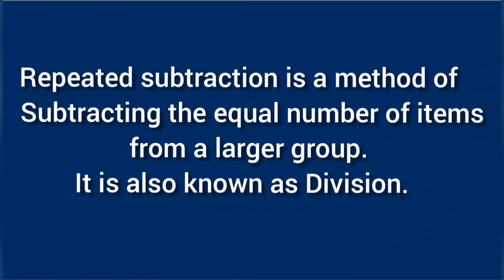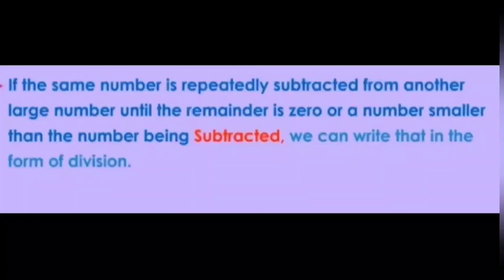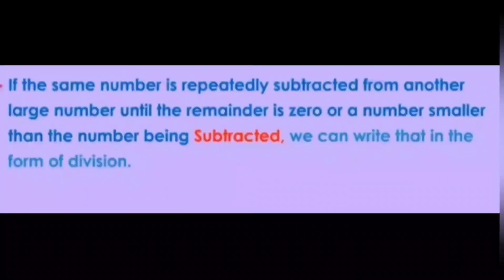the equal number of items from a larger group. It is also known as division. If the same number is repeatedly subtracted from another larger number until the remainder is zero, or a number smaller than the number being subtracted,